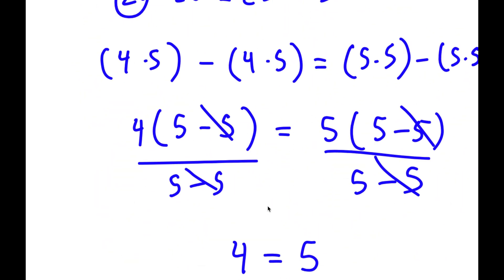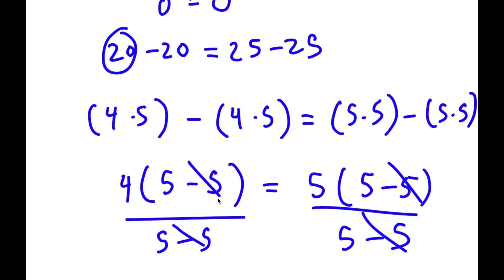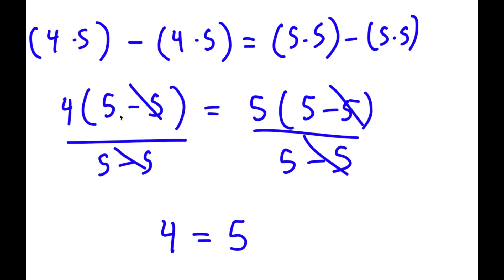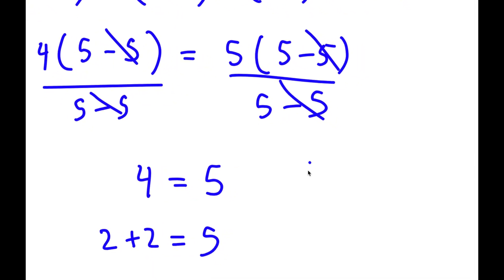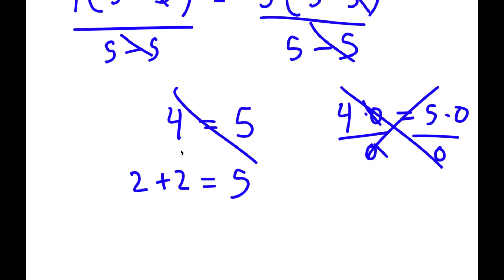Now, we obviously know that this is not right — 4 does not equal 5. So where did I go wrong? Well, if you notice, I divided both sides by 5 minus 5. We know that 5 minus 5 is 0. So this is the same thing as 4 times 0 equals 5 times 0, and then dividing both sides by 0. I can't cancel out 0 and 0 because 0 divided by 0 is not 1 — it's undefined. 0 divided by 0 has no definite value, so this step is wrong, meaning the proof is wrong, and 4 is not equal to 5.